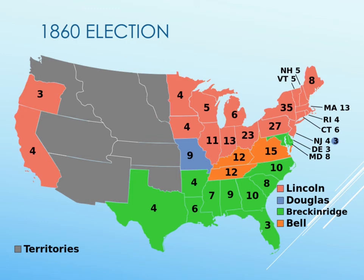He gets 39.9% of the popular vote, but because the country is divided and because most of the population center is in the North, and because of the Electoral College, he gets 180 electoral votes, which effectively makes him President of the United States.